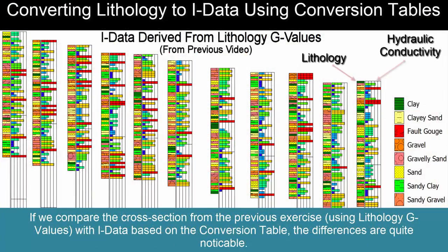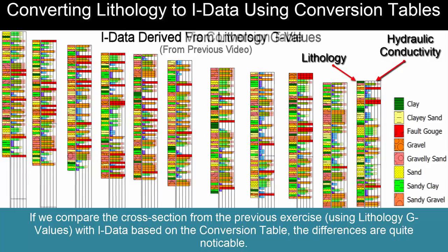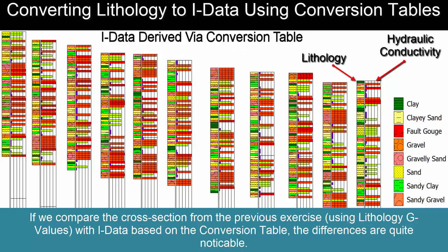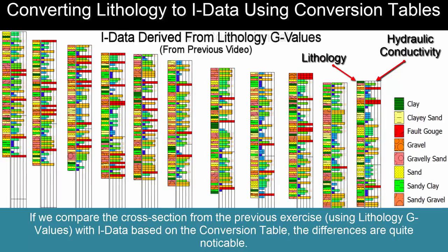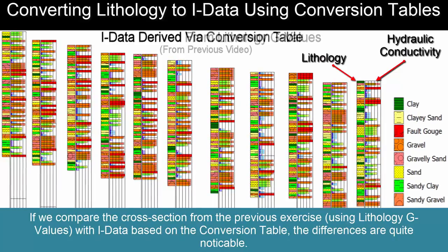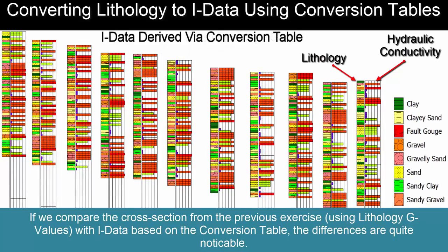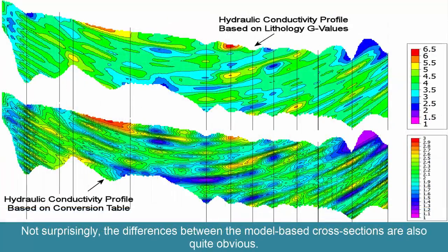If we compare the cross-section from the previous exercise using lithology G-values with I-data based on the conversion table, the differences are quite noticeable. Not surprisingly, the differences between the model-based cross-sections are also quite obvious.